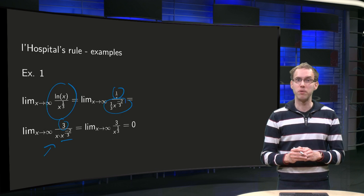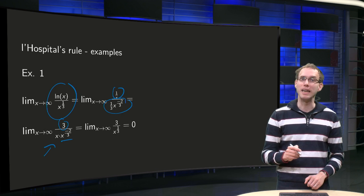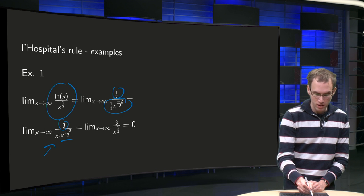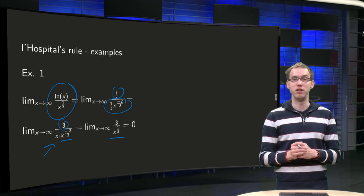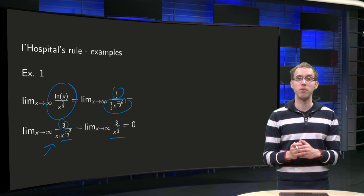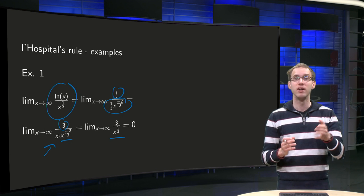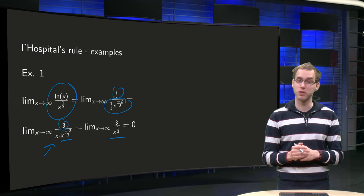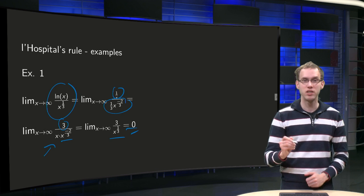And after those simplifications, so we cleaned up some mess, we get 3 times x to the power 1/3. And then you know what the limit does: if x goes to infinity, x to the power 1/3 blows up. So we have 3 divided by something which becomes arbitrarily large, so our limit equals 0.